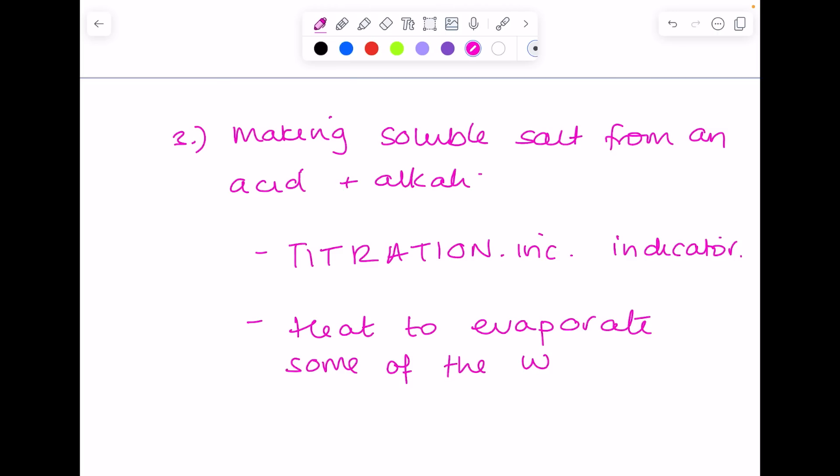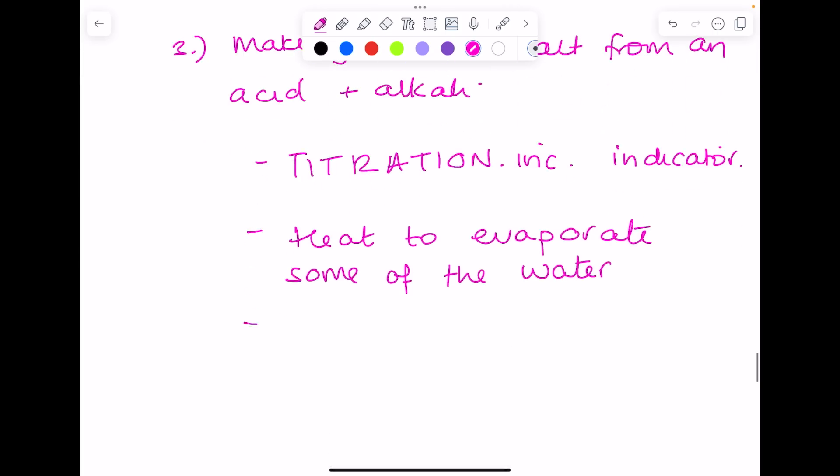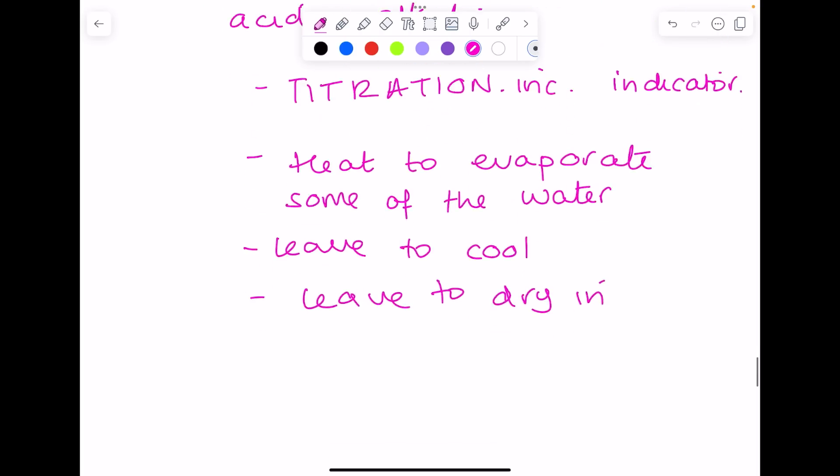Because you want a hydrated salt you want to leave to cool, and you want to leave to dry. So you can see the first and third method are quite similar. The difference is when you have an acid and alkali you need to do a titration first to find the exact volumes of acid and alkali needed. If you're not sure, just say something about drying in a drying oven, okay, just to get a mark there and talk about mixing the reactants together.